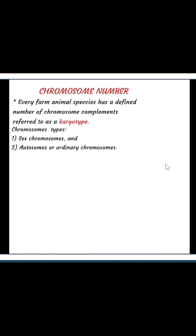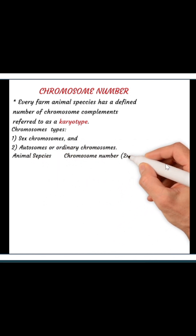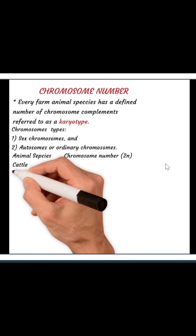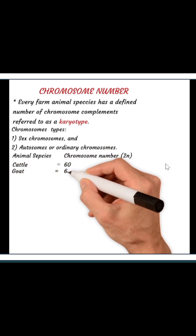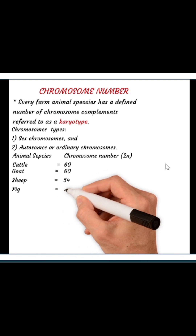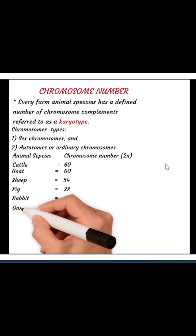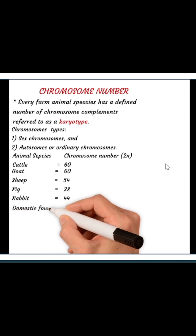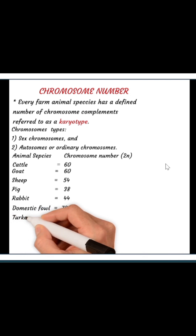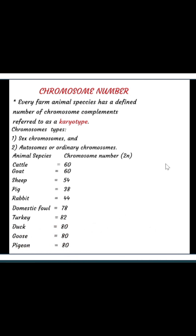Let's look at how chromosomes vary from one farm animal species to another — cattle, sheep, goats, poultry species and so on. In cattle, we have 60 chromosomes, which is 30 pairs. Goat has 60 chromosomes, which is also 30 pairs. Sheep has 54 chromosomes. Among all the chromosomes that an animal species has, only one pair makes up the sex chromosomes, while the rest constitute what we call the ordinary chromosomes.